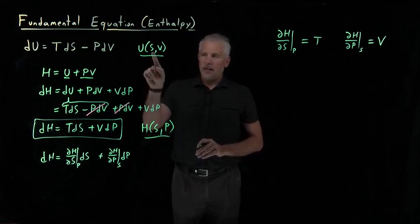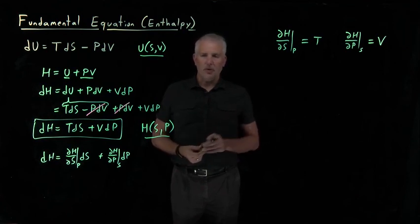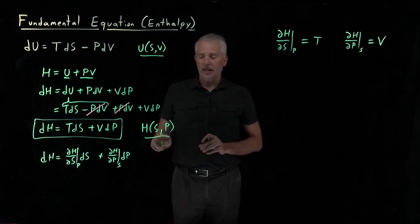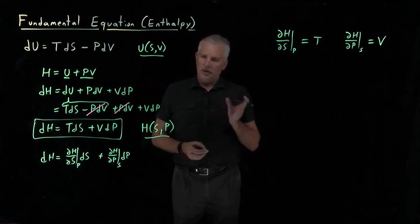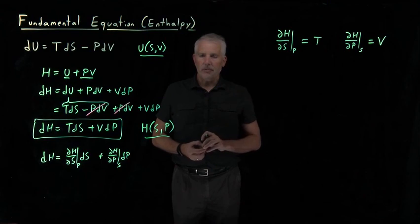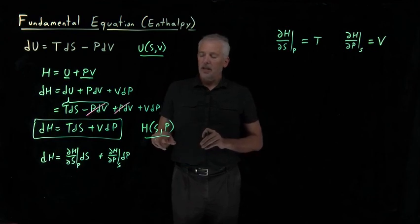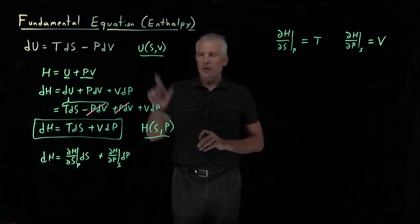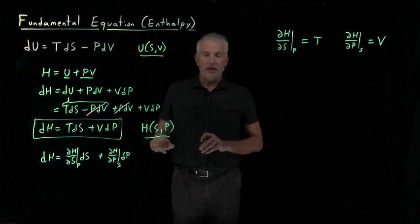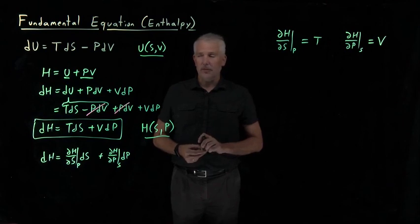We're still left with the fact that having entropy as a natural variable is not terribly convenient. It will be much easier when we can talk about functions whose natural variables are not the entropy but the temperature. As a preview of what's to come in the next few video lectures, you can ask yourself: what would we do to these energies to transform the natural variable from S to T? We'll see that in an upcoming lecture.